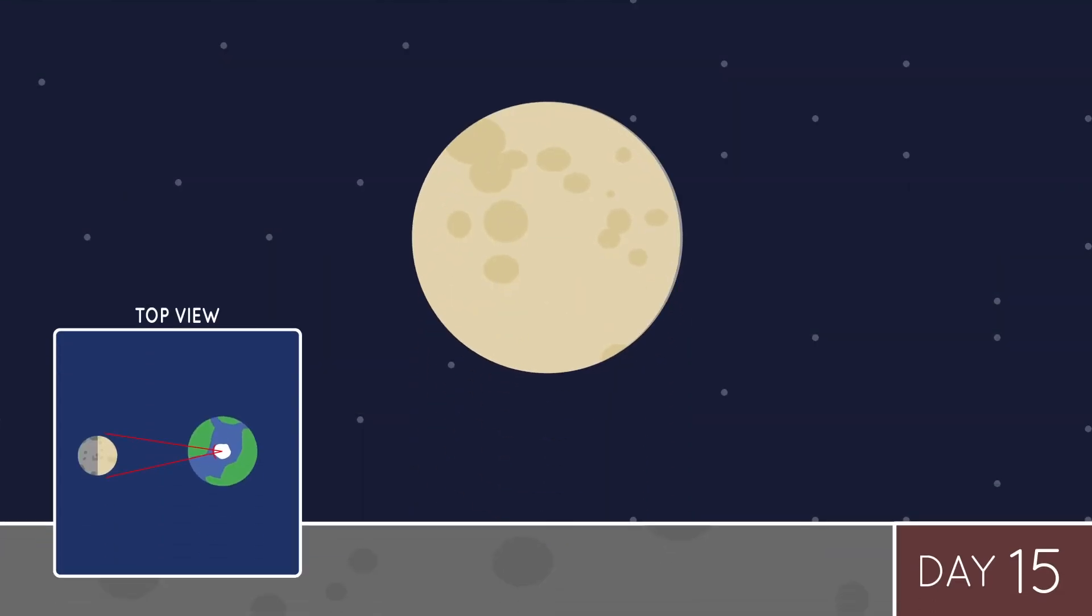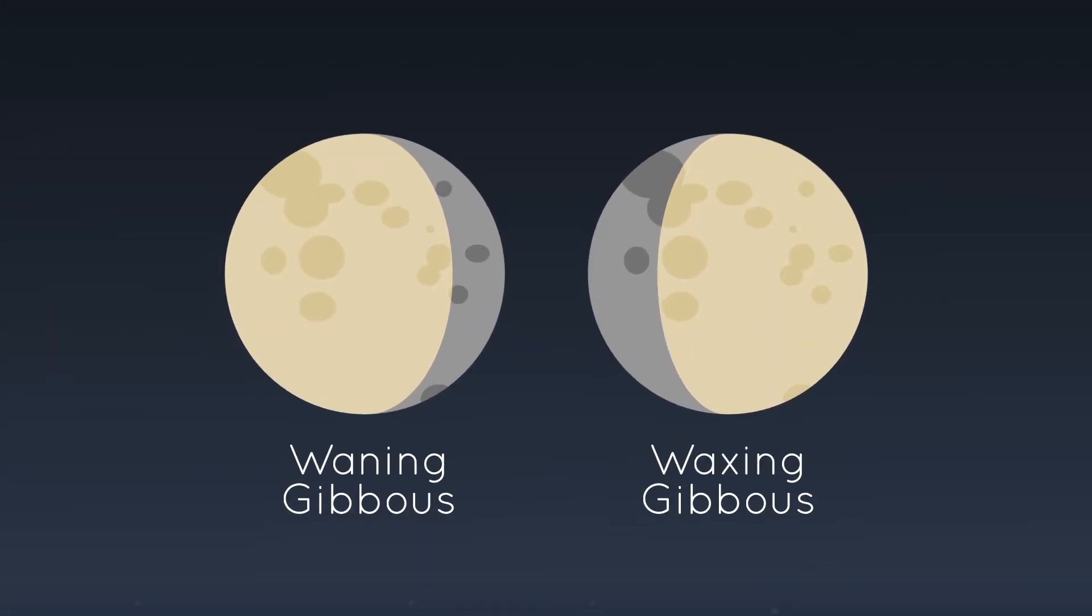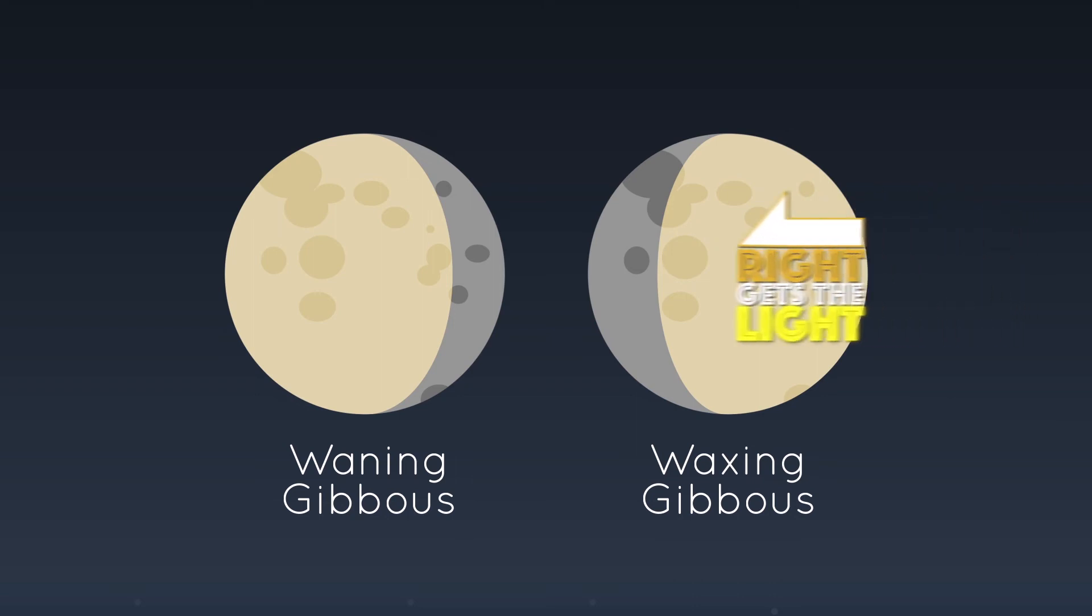So our light wanes, but the portion of light is still a giant, a waning gibbous. Look side by side with the waxing gibbous. Remember, right gets the light. So this one with light entering is waxing, and this one is waning. Light leaves to the left.